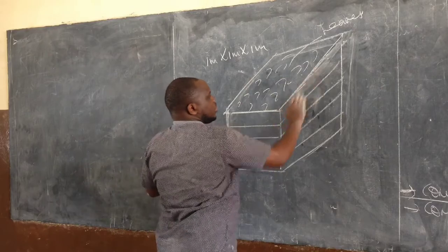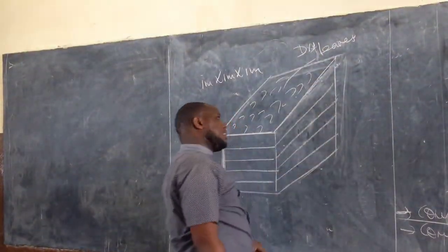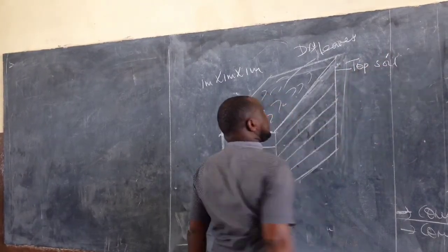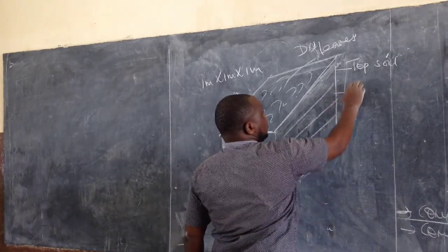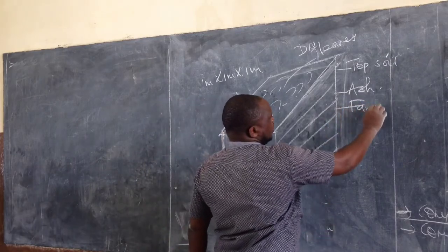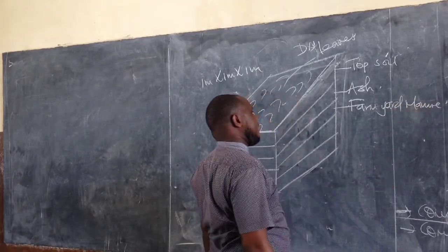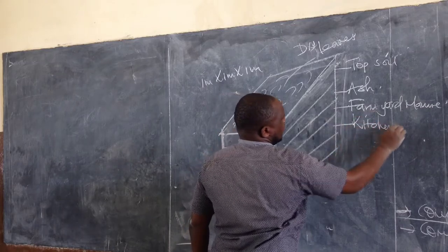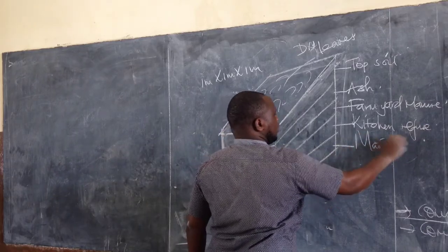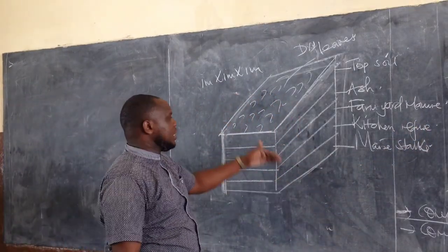The first layer is dry leaves — just dry leaves, don't put green ones, dry leaves only. The second layer is going to be topsoil. Then we have ash. The wood ash layer is followed by farmyard manure. Then we go to the kitchen refuse. And lastly, we have maize stalks. So these are the layers found in a compost pit — six layers in total. At the bottom we have maize stalks, because maize stalks make it very difficult for water to seep through.